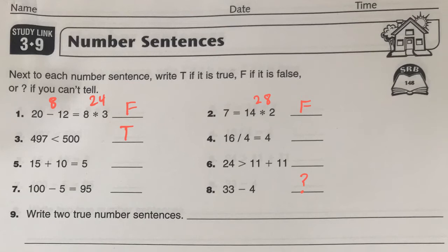Then write two of your own. So maybe I want to say, and please don't use the same as me, but I'm going to say, 12 times 3 is equal to 40 minus 4.